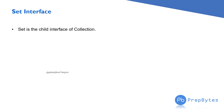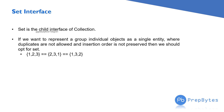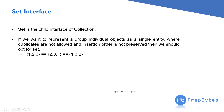In the Set interface, the first point is that Set is a child interface of Collection. If we want to represent a group of individual objects as a single entity, that is the definition of Collection, where duplicates are not allowed and insertion order is not preserved. These two are the important differentiating points between List and Set. In List, duplicates were allowed and insertion order was preserved, but in Set, duplicates are not allowed and insertion order is not preserved.